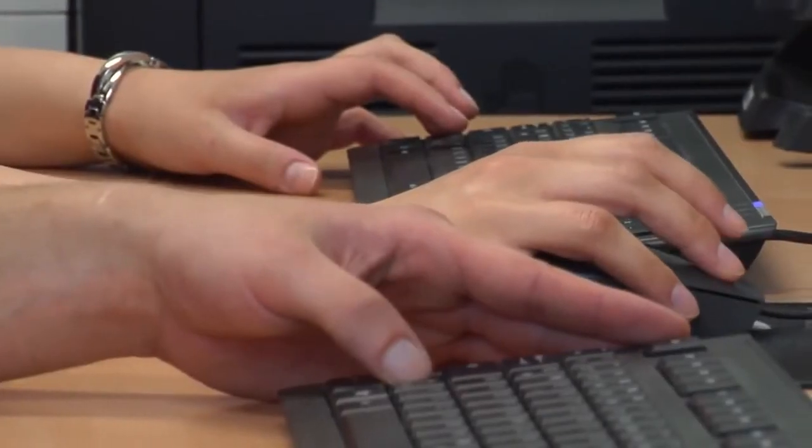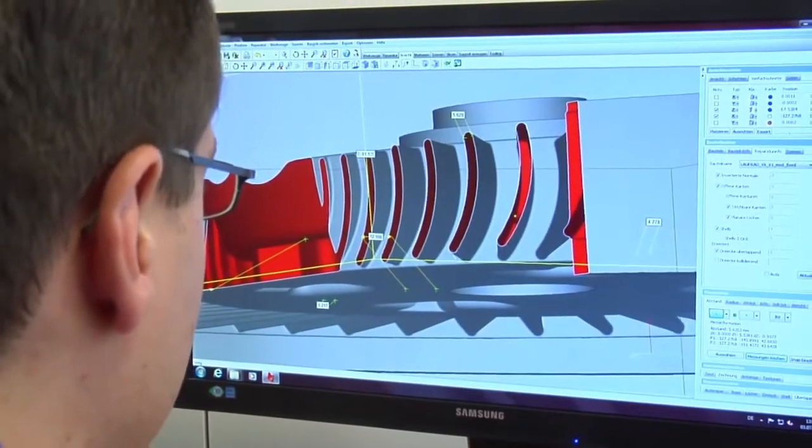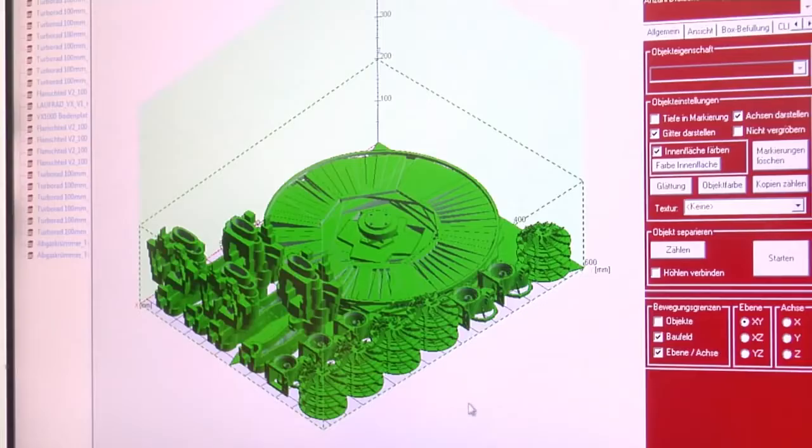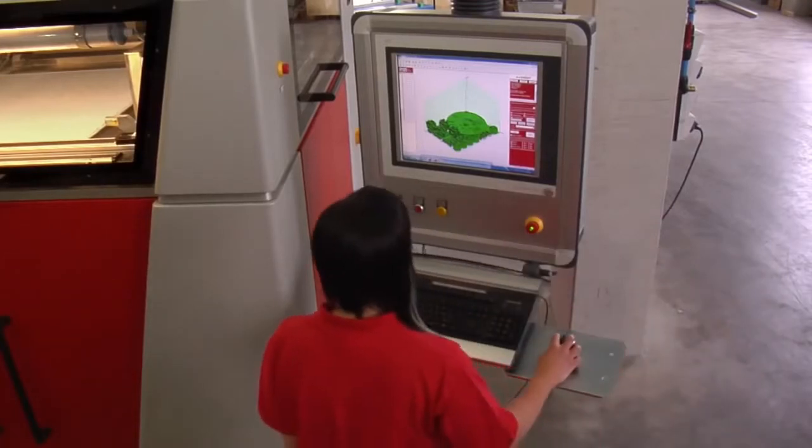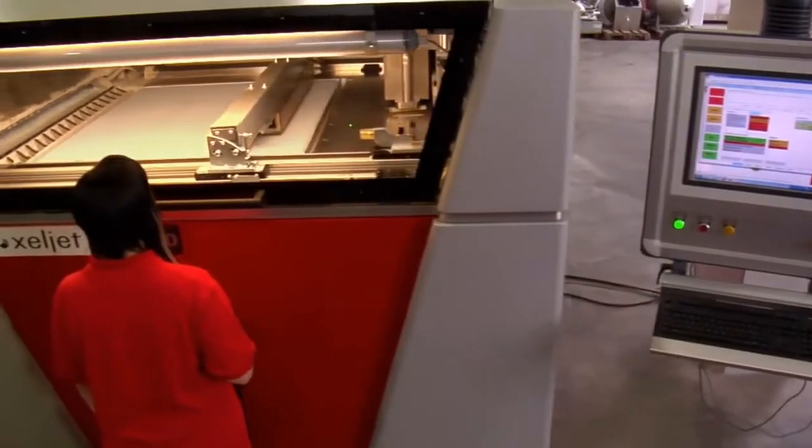Geometries can be changed at any time as this process does not use any tools. The printing process begins when the recoater applies the PMMA powder to the build space in 100 to 150 micrometer layers.